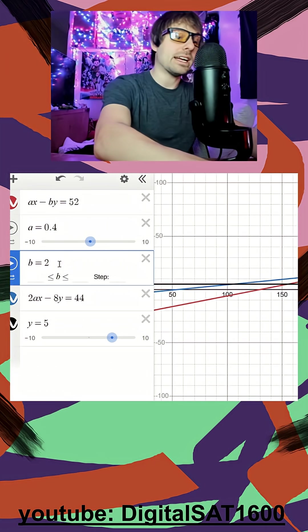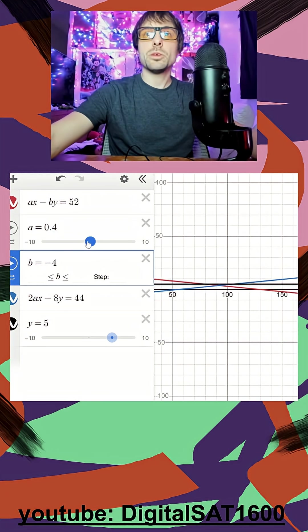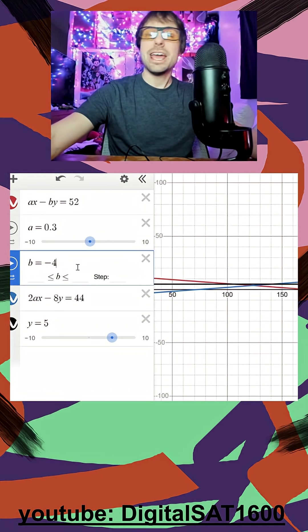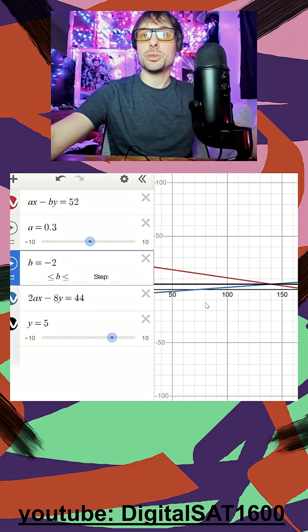So we'll try b equals negative 4. And this one's even weirder. Look, they intersect right after y equals 5, right below the line, and they stay intersecting right below the line. And again, once you kind of see it, you'll know what to look for in the future.